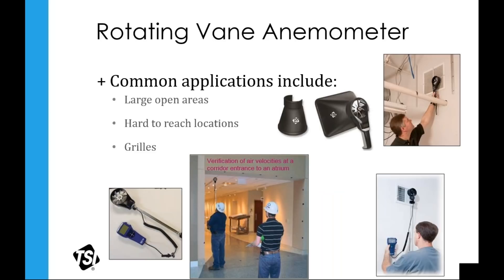A couple more application photos: the bottom photo shows two technicians who have gridded off the entrance to an atrium — you can see tape on the walls, ceiling, and floor creating a grid pattern. They're placing the vane anemometer in each grid to calculate the velocity, then multiplying by the area in square feet of that opening to give the flow coming in or out of that atrium.